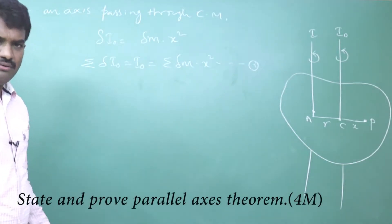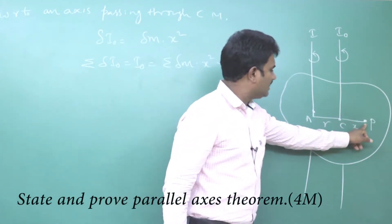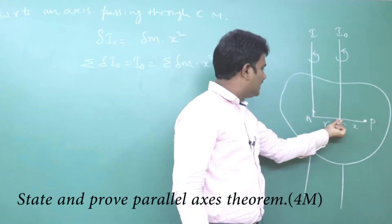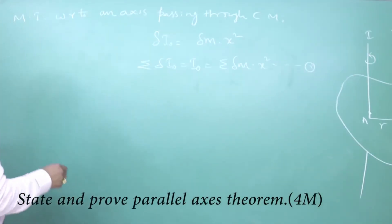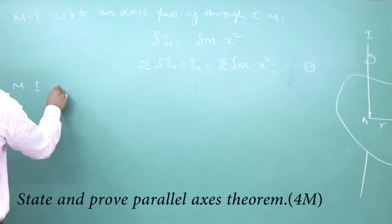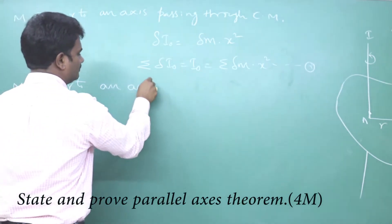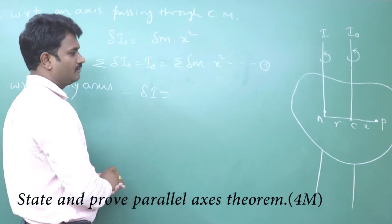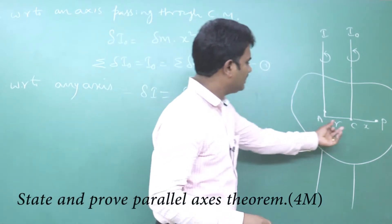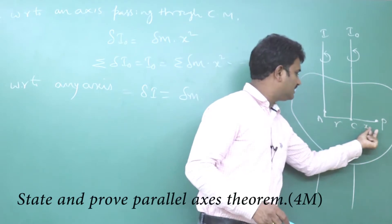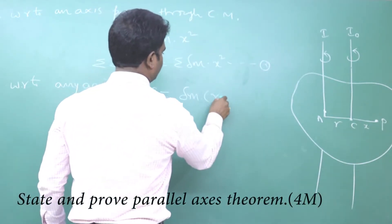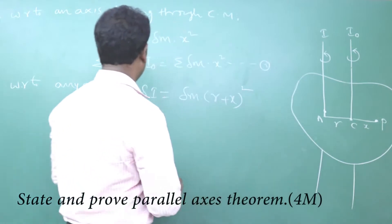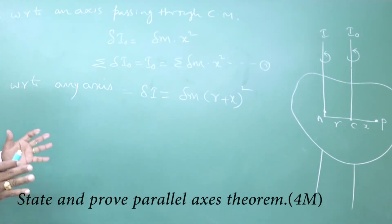Now, what is the moment of inertia of particle P with respect to the other axis — the one parallel to the center of mass axis and at a distance r from it? That is δI = δm · (r + x)², since the distance of particle P from that axis is (r + x).